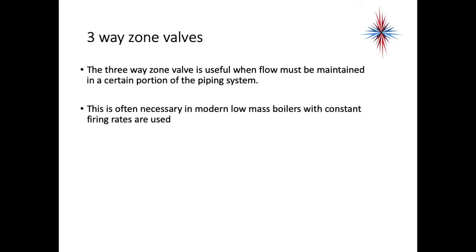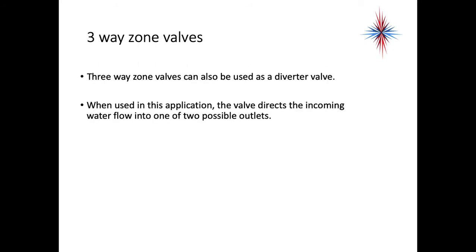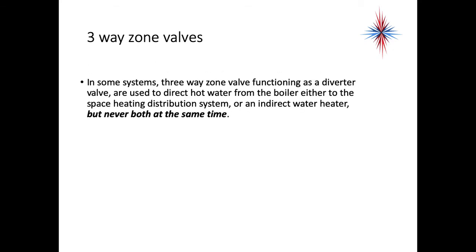A three-way zone valve is useful when the flow must be maintained in a certain portion of the piping system. This is often necessary in modern low-mass boilers with constant firing rates. It's also necessary in chilled water systems. We have to maintain the flow. A three-way zone valve can also be used as a diverter valve. When it's used in this application, the valve directs the incoming water flow into one of two possible outlets. In some systems, the three-way zone valve functioning as a diverter valve are used to direct hot water from the boiler to either the space heating distribution system or an indirect water heater, but never at the same time. It's an either-or.